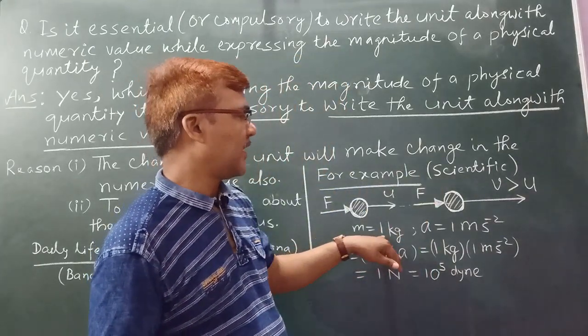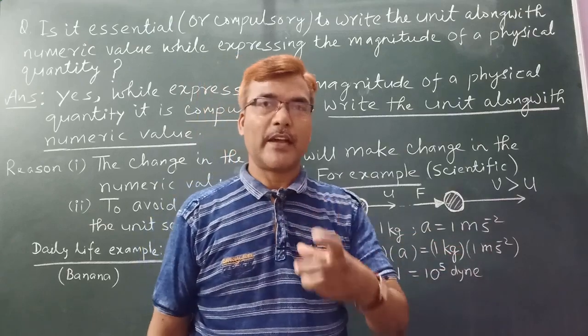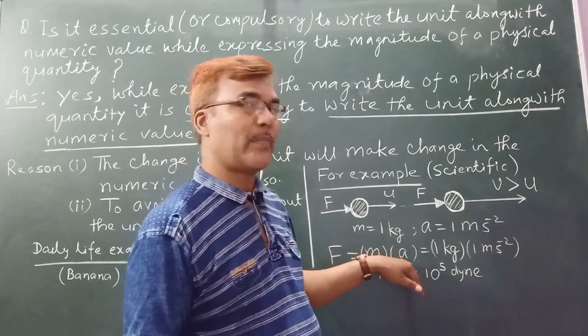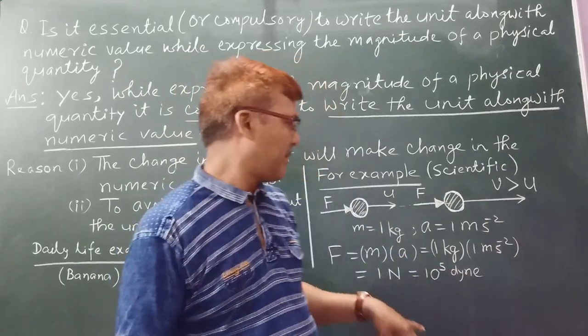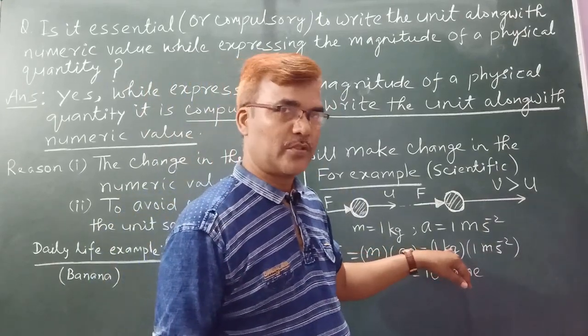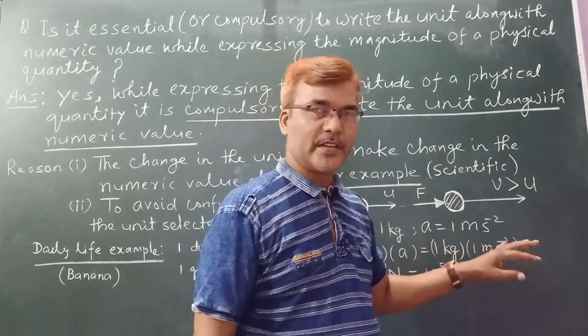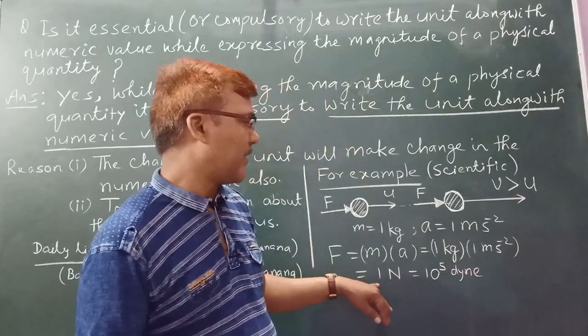So see, mass of 1 kg, acceleration of 1 meter per second square. The force is equal to m into a by Newton's second law of motion. So you will substitute values. In place of mass, 1 kg, in place of acceleration, 1 meter per second square. So how will it be? 1 newton. 1 newton can be written as 10 to the power 5 dyne.